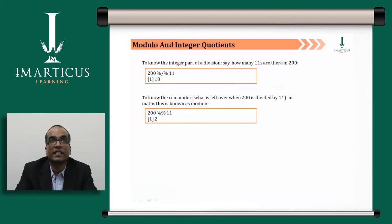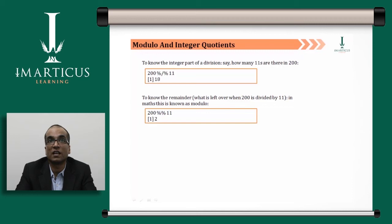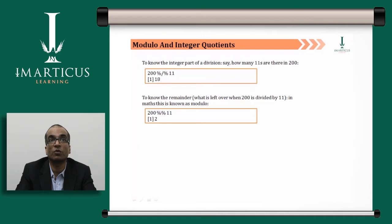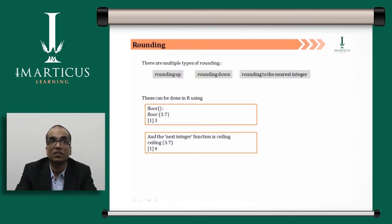For modulo and integer quotients: the modulo operator is represented as %% in R. To find how many times 11 goes into 200, you use integer division. Putting the modulo operator gives you 18 as the quotient. To find the remainder, type 200 %% 11, and you get 2.